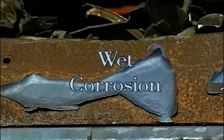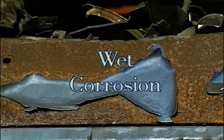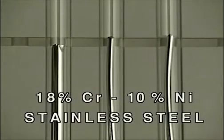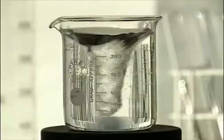Explaining the difference between stainless steel and carbon steel starts with an experiment on wet corrosion. These three test tubes contain pieces of carbon steel, and these contain pieces of stainless steel.